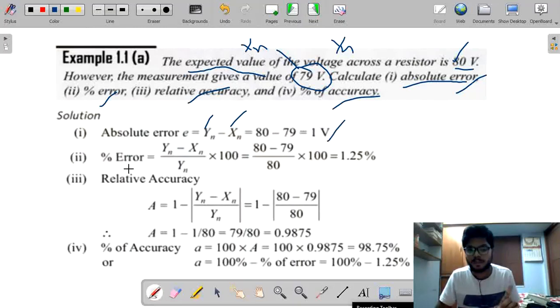Now, coming to percentage of error. What we have defined? Absolute value to the expected value. Now, see, Yn minus Xn by Yn into 100. What is Yn value? 80 minus 79 by 80 into 100. It's 1.25. Simple. Just in 5 seconds, you will get the answer.